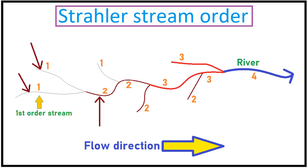A second order stream is formed when two or more first order streams meet and form a single channel to flow together. Similarly, when two or more second order streams join, a third order stream is formed.